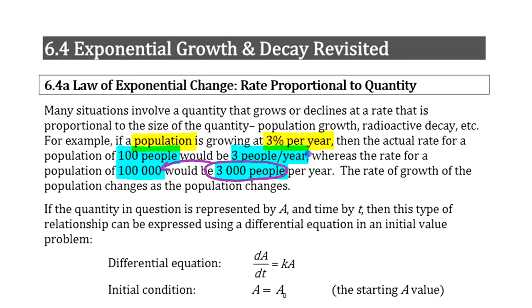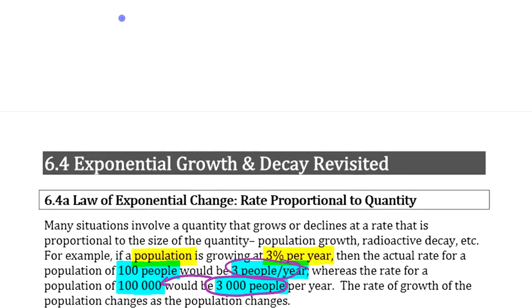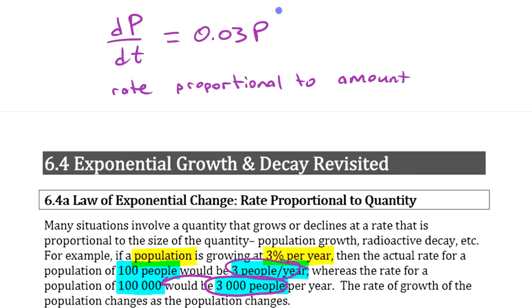In this case, the rate of growth is 0.03 times the population. If you want to use derivatives to say that, you can say the rate of growth—so if we use P for population here—dP/dt, the rate of change of population is 3% of the population. So this is rate proportional to amount. This differential equation here states that fact. The rate is proportional to, is some kind of constant times the actual amount itself.